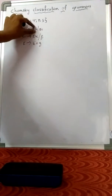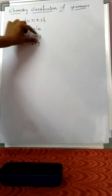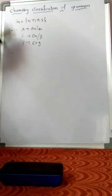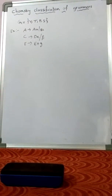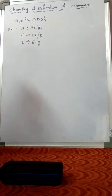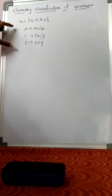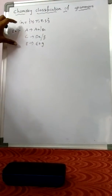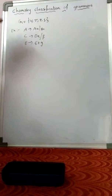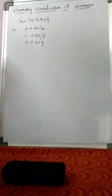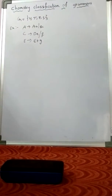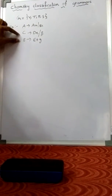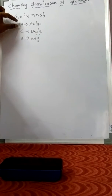Epsilon is on the right-hand side. That is a rule. So a grammar defines a finite or infinite language. Production rules define how to generate a string.